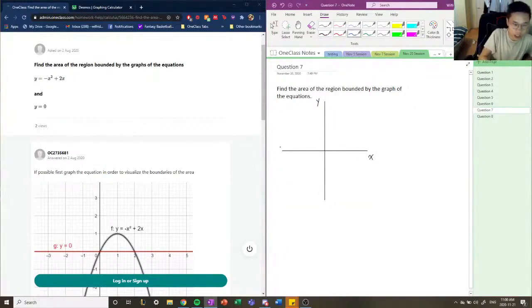So our first function is just the x-axis, which is y equals zero. And our second equation is the parabola negative x squared plus 2x. So the zeros for this are zero and two. So we have something like this.